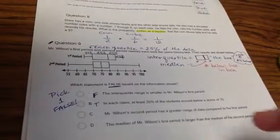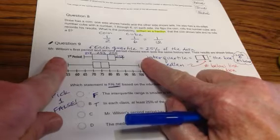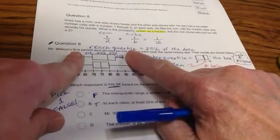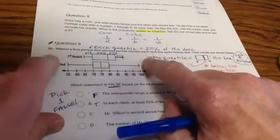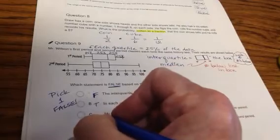Letter C. Mr. Wilson's second period has a greater range of data compared to his first period. Second period, that's a much larger range of data from 100 down to 55 than first period. That only goes from 90 down to 65. So this is like a 35 range and this is like a 45 range. So that's true. Good. Looking good.